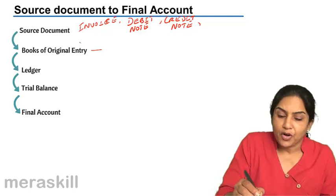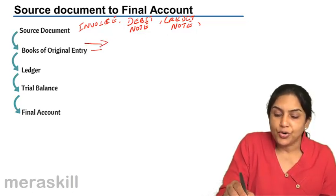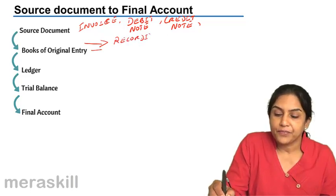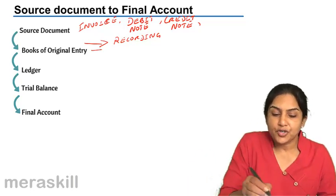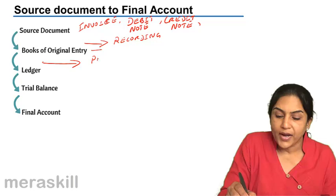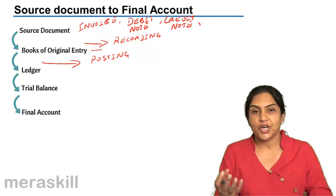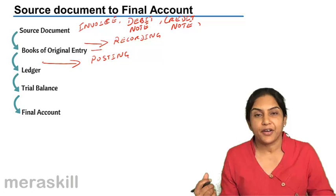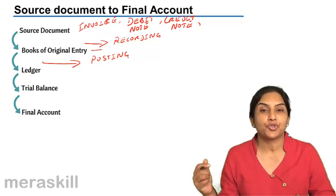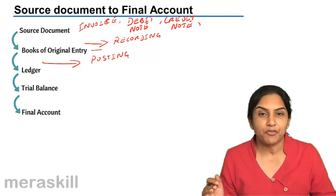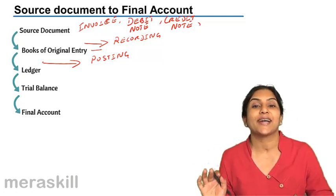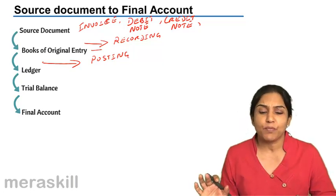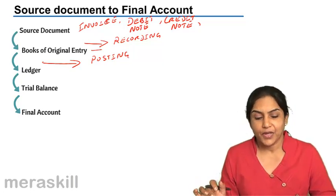This is the point of recording, and errors could occur here while recording. Errors could also occur while posting from the journal to the ledger account — for example, instead of taking a thousand rupees we may take a hundred rupees, or instead of posting to the correct account we may post to the wrong account, or instead of posting to the debit we may post to the credit.